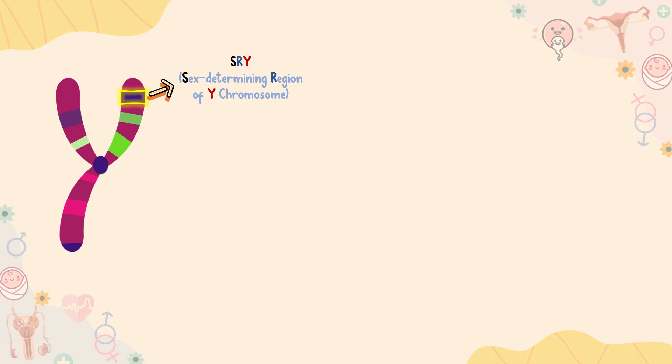Females do not have a Y chromosome, so they do not have the SRY gene. Without a functional SRY gene, an individual will always be female. The SRY gene encodes a protein called a transcription factor, which then activates other genes.